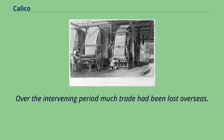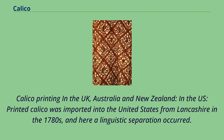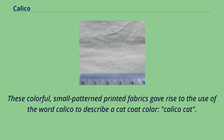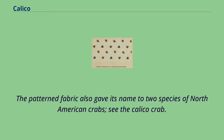Calico printing spread to the UK, Australia, New Zealand, and the US. Printed calico was imported into the United States from Lancashire in the 1780s, where a linguistic separation occurred. While Europe maintained the word calico for the fabric, in the States it was used to refer to the printed design. These colorful, small-patterned printed fabrics gave rise to the use of the word calico to describe a cat coat color — the calico cat. The patterned fabric also gave its name to two species of North American crabs.